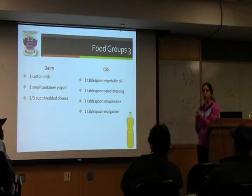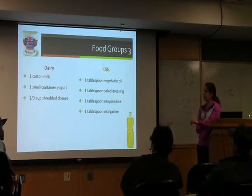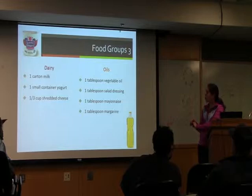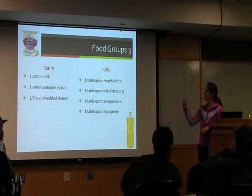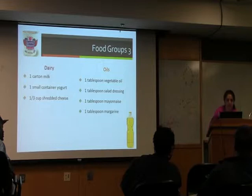The last two groups: one is dairy. One serving of dairy would be like a carton of milk you'd get in school, or a yogurt, or some cheese. And then the last category is oils — any kind of salad dressing or oils that you cook with. That's about one tablespoon.